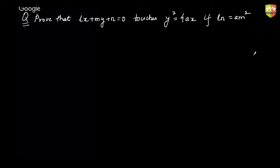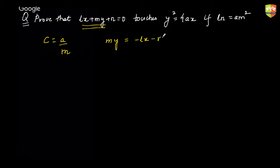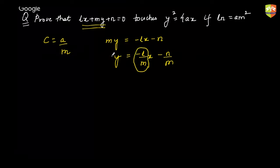We have just discussed that C should be equal to a/m. Now for this line, what is the slope? First, write My = -Lx - n, then y = (-L/m)x - n/m. So note that -L/m will be acting as your slope. Don't confuse between this m and the m given in the problem.